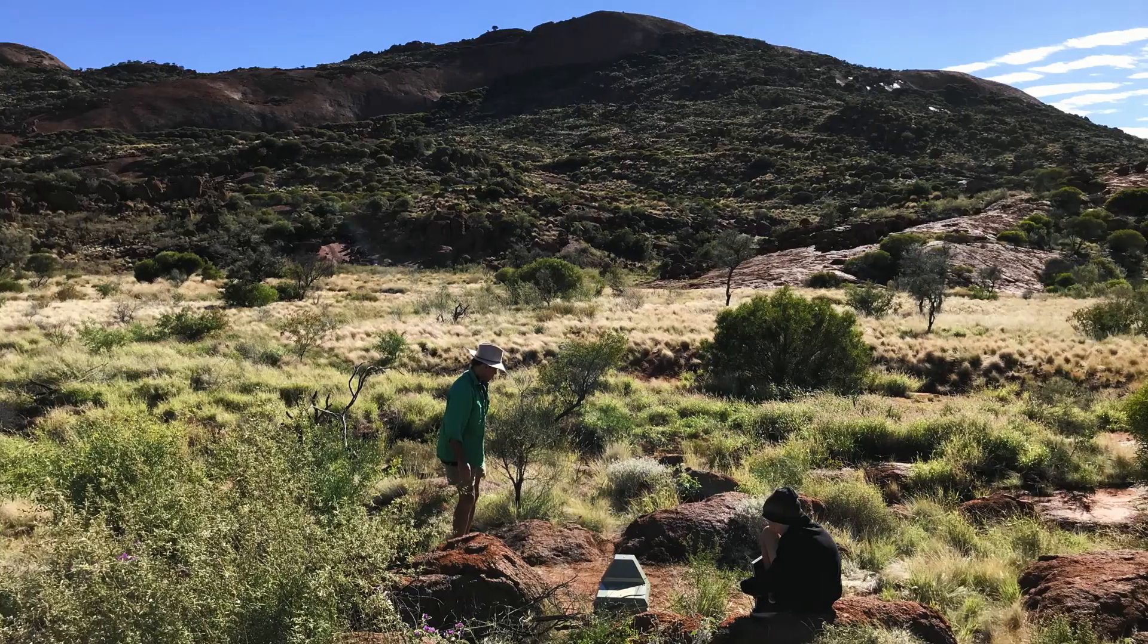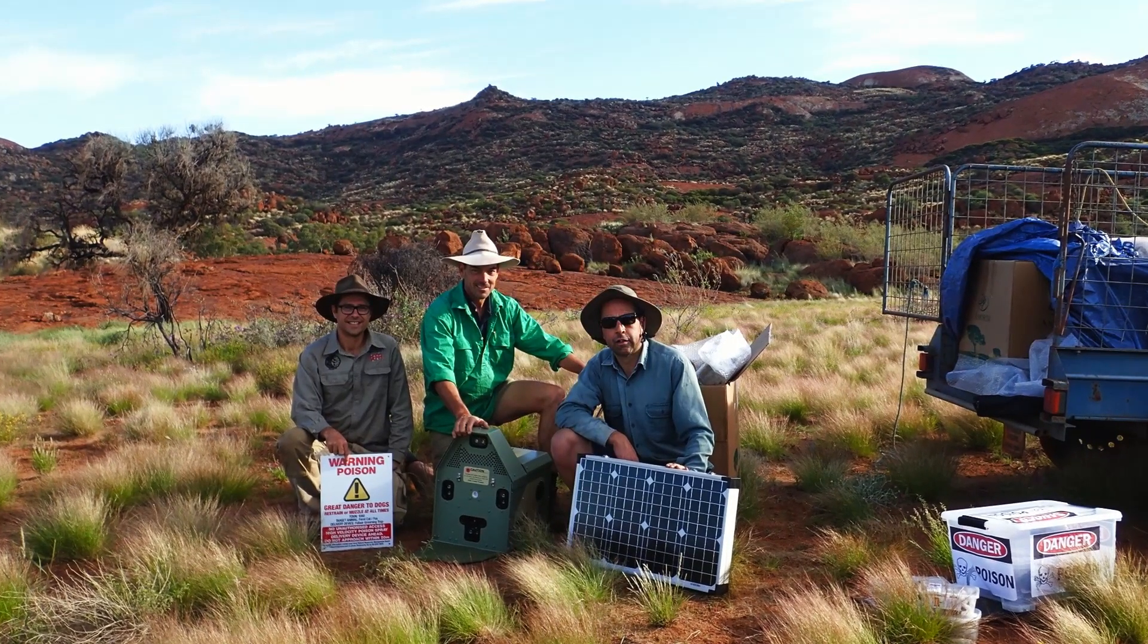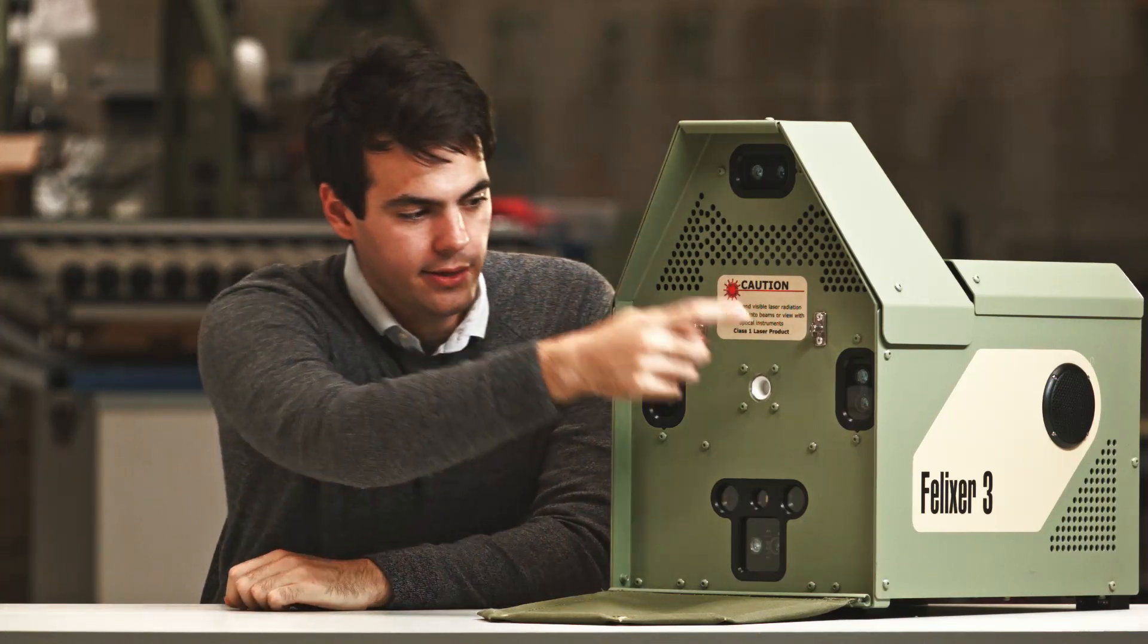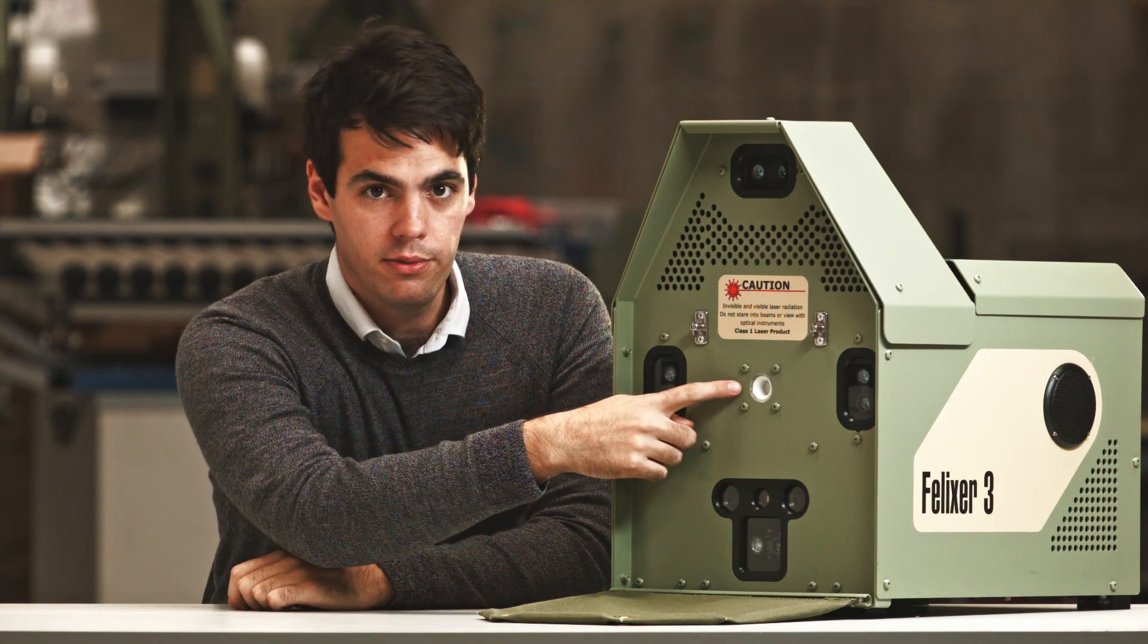The Felixer came to us as a concept to reduce the feral cat population in national parks. We use four sensors to detect target animals, in particular cats, and our gel squirts out from here.